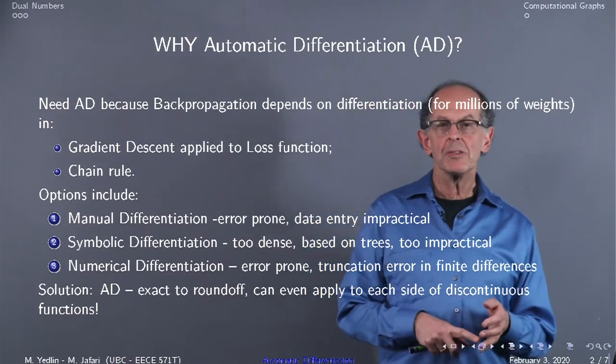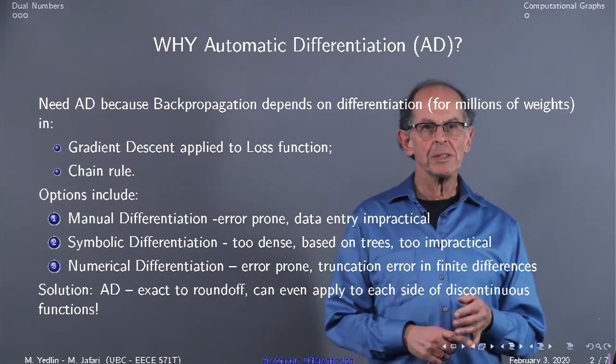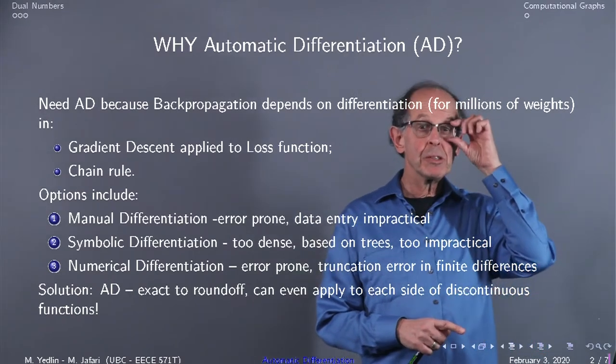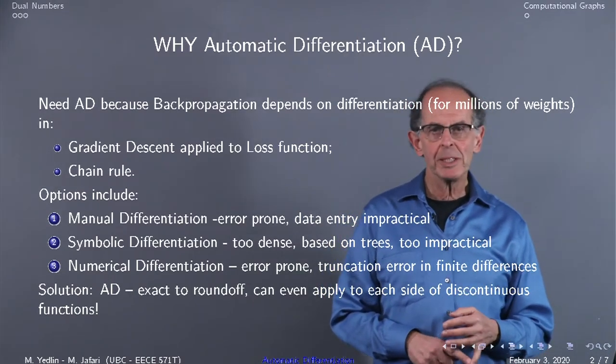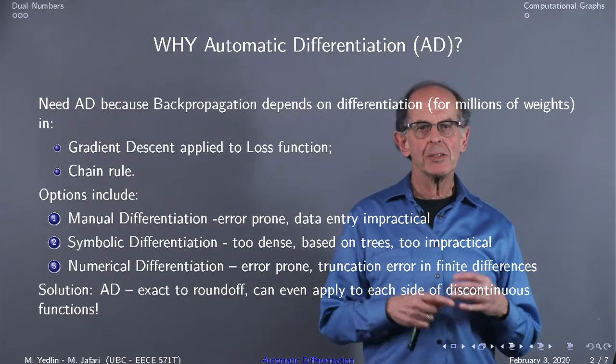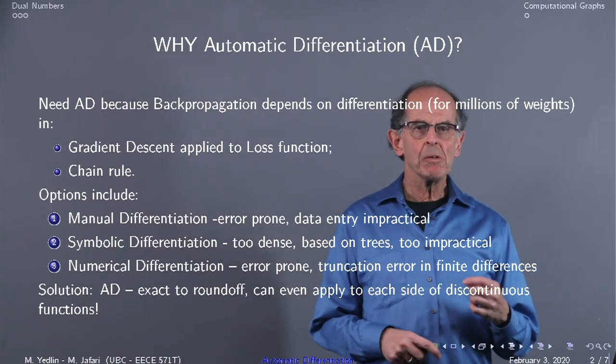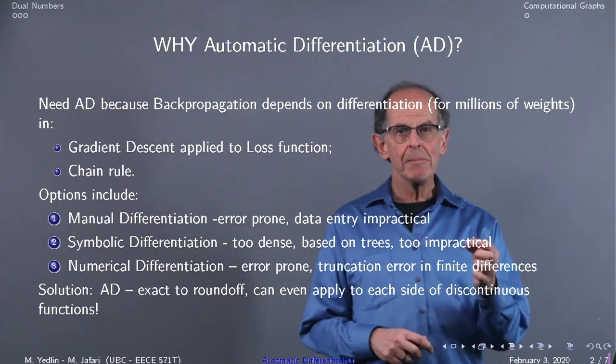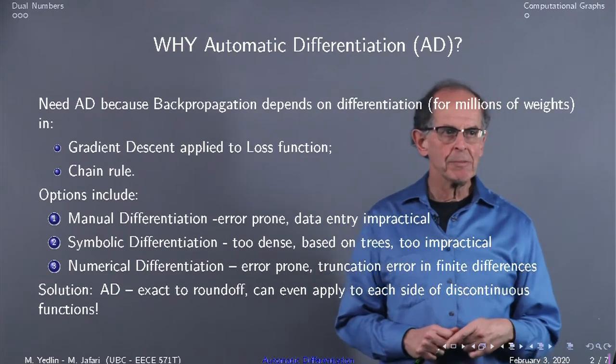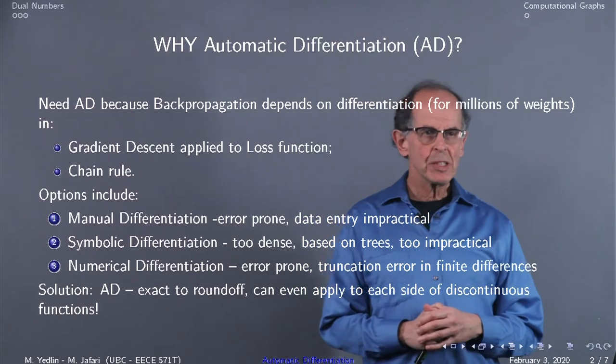Our options include manual differentiation, which isn't possible with millions of weights. Symbolic differentiation is based on trees and expressions can get very complicated. Numerical differentiation is possible but subject to truncation error. Let's use automatic differentiation, denoted by AD, which is exact to roundoff and can even apply to discontinuous functions.